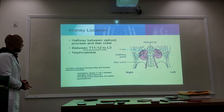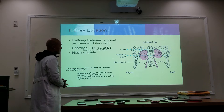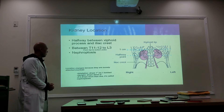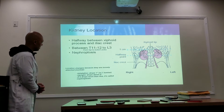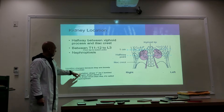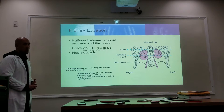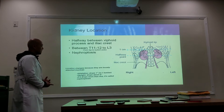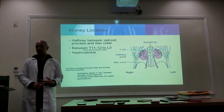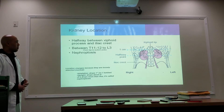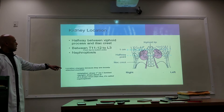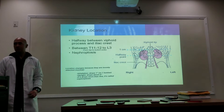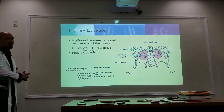There is a possibility that the kidneys can drop from their normal position because they are loosely attached. When you breathe in, the kidney drops about one inch or one lumbar vertebra. In an upright position, it drops two inches. If it drops more than that, it is known as nephroptosis.